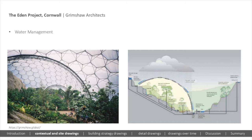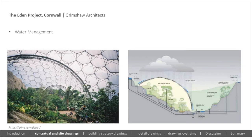My final example of a contextual or site level drawing shows water management — this is the Eden Project by Grimshaw Architects. The PTFE bubbles are architecturally not my favourite, but the site has a great ecological agenda. This diagram shows how water is collected and stored, then uses gravity to run down the sides of the quarry, feeding plants and humidifying the air. When it reaches the bottom, it can be pumped back up and recirculated. From a sustainable point of view, the key question is what electricity is feeding that pump — you would certainly hope it's powered by a renewable source rather than fossil fuels.